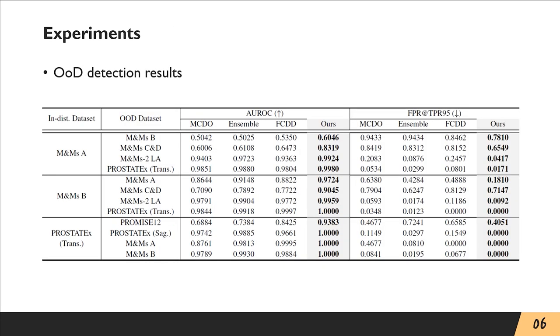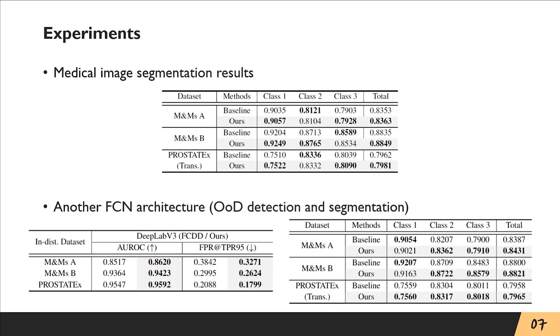Here are experimental results with UNet. In OoD detection, we achieve superior performance while maintaining high segmentation accuracy. We also present that our methods can be applicable to another FCN architecture.